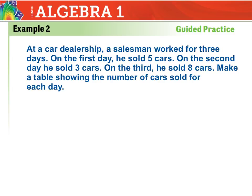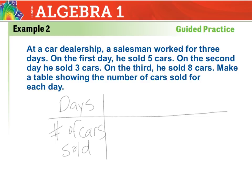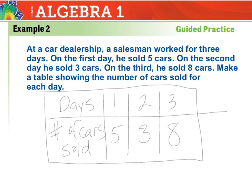Again, we're going to make a table for the car dealership. Our two variables are the day and the number of cars sold. On the first day: 5 cars sold; on the second day: 3; and on the third day: 8. You can make your table in more than one way — we made this one going horizontally as opposed to vertically. It's all good.